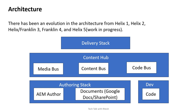Hi everyone, welcome back. In this video we'll cover the architecture, which is quite simple. This Helix project, also called Franklin, has been an evolution in architecture — that's why it has several names: Helix 1, 2, then Helix Franklin 3, Franklin 4. The current version is Franklin 4, and Helix 5 is a work in progress. This series I've created is based on Franklin 4.